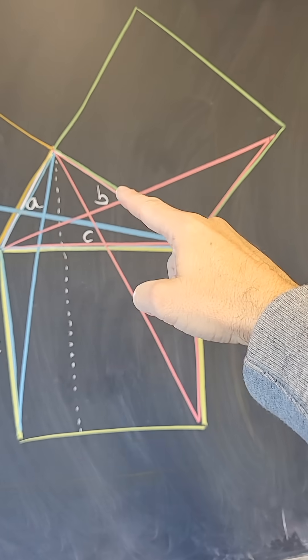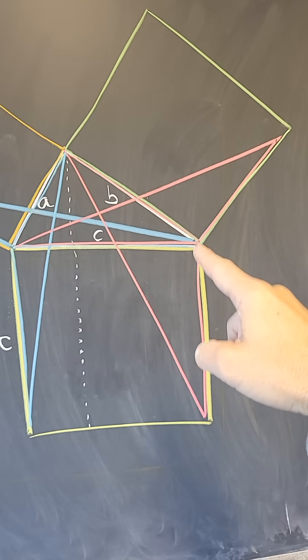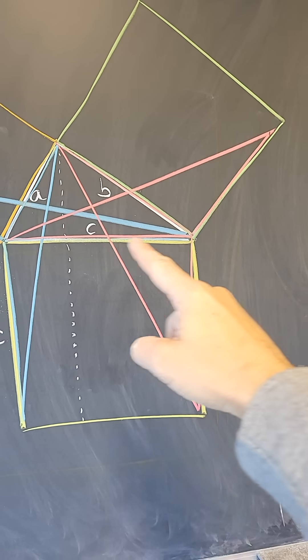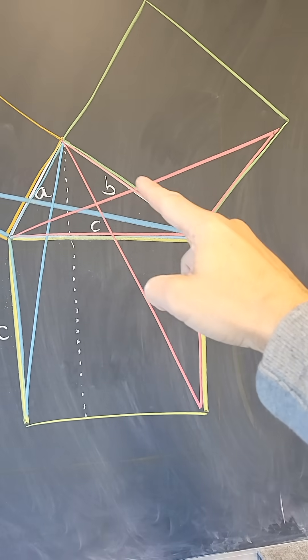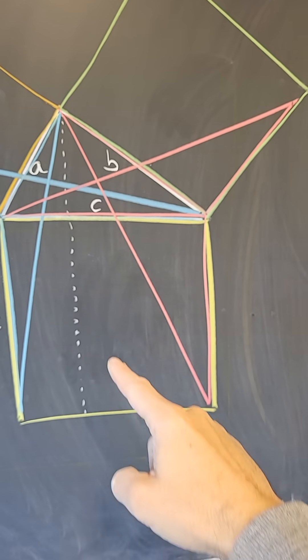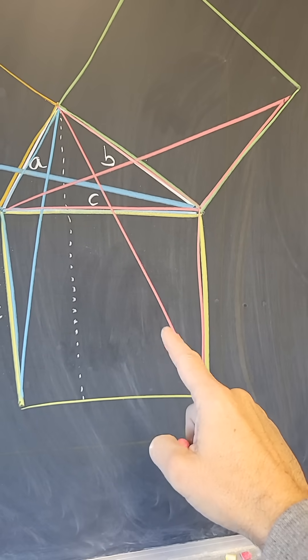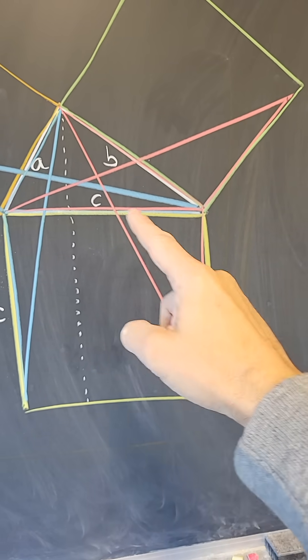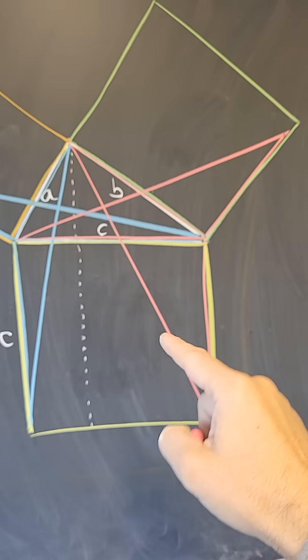This one has area that is equal to this base times the height up to here. So this one has area also B squared divided by 2. But it coincides with half of the area of this rectangle. And therefore, the rectangle here has area B squared.